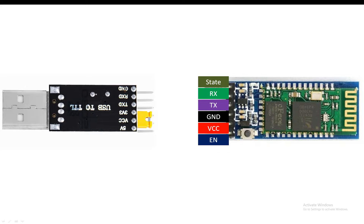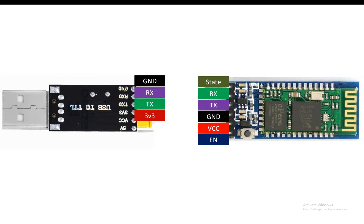The enable pin is responsible for switching the mode. In some modules it's named the key pin, and in some it's chip select, but for HC05 and HC06 it is either key or enable pin. When you give 5 volts to this enable pin, your module enters command mode and you can send AT commands to change the settings. For the USB to TTL device, the pins from top are: ground, RX, TX, 3.3V, VCC, and 5V.